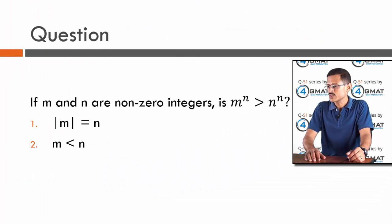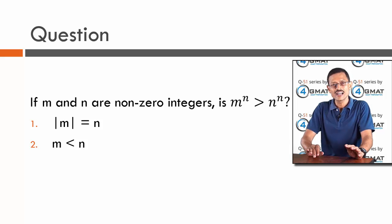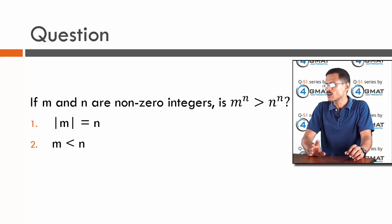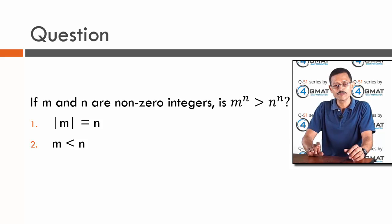The question reads as follows: If m and n are non-zero integers, is m power n greater than n power n? Two statements follow this question. The first one is: modulus of m is equal to n. The second one is: m is less than n.